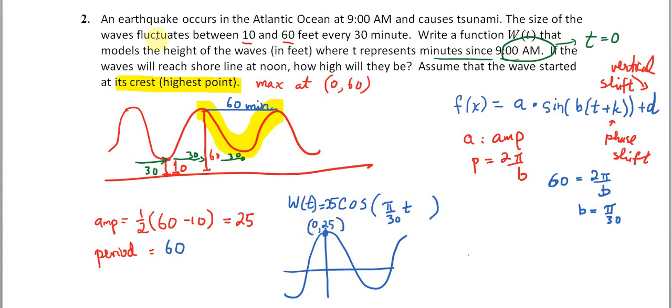But we want a max at (0, 60). So that means we have to shift everything up 35 units. And we don't need a phase shift in this case because our maximum is occurring when time is equal to 0.